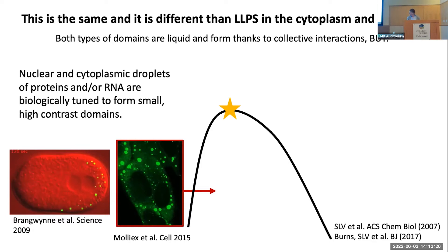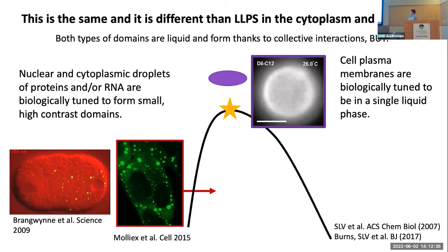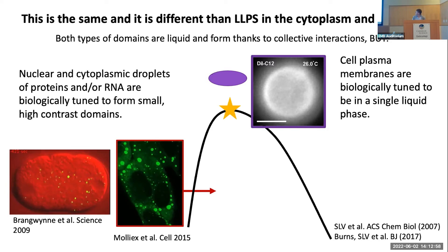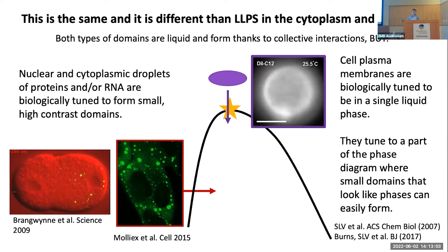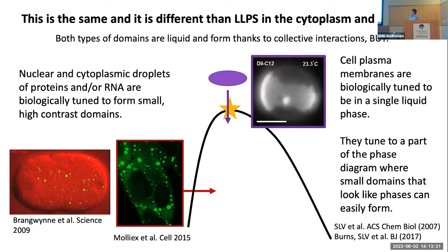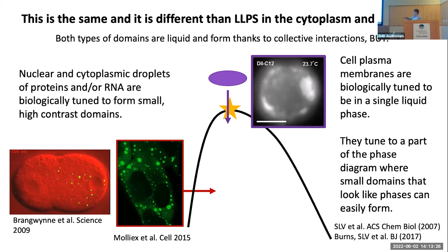All the pictures we've seen so far are highly concentrated regions of proteins and typically RNA that are really high contrast. They pass through the phase boundary through a variety of different means. Membranes, however, are biologically tuned very differently — they aren't actually in this two-phase region of the phase diagram, really ever. They seem to sit at a temperature above the phase transition temperature, and in a different part of the diagram. If you do force a membrane — and this is an example of a vesicle isolated from the plasma membrane of a cell — to pass through its phase transition, it does so in a very different, dynamic, fluctuating way.